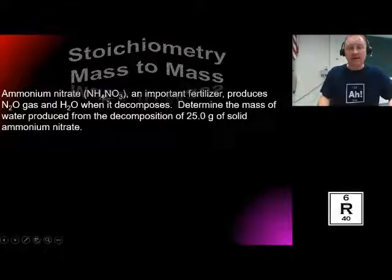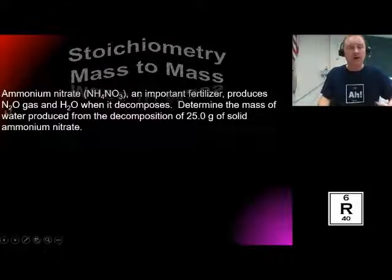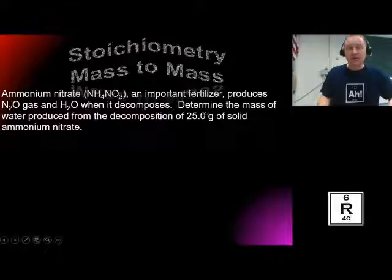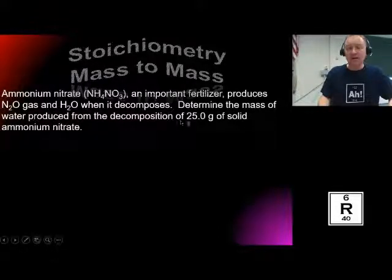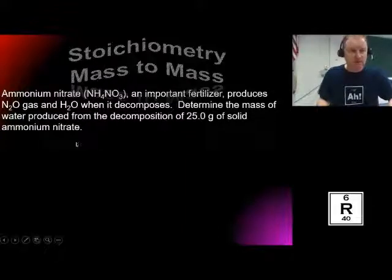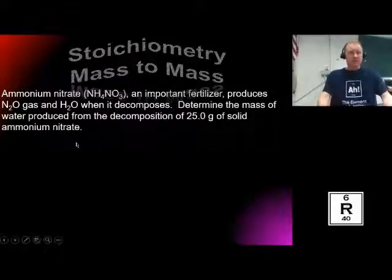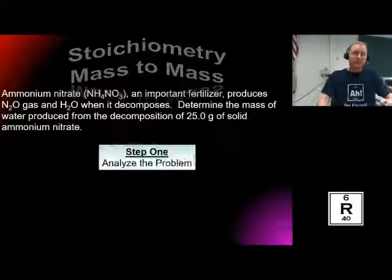Ammonium nitrate, which is NH4NO3, is an important fertilizer. It produces dinitrogen monoxide and water when it decomposes. The question is: determine the mass of water produced if 25 grams of ammonium nitrate is decomposing. So what would be the mass of water produced?